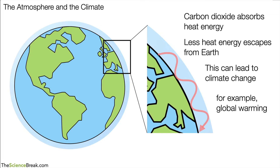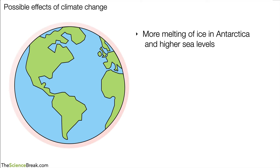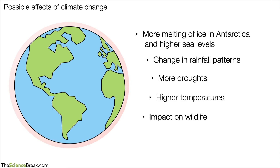One example of a change in the climate is global warming, when the average temperatures of the planet get higher. The possible effects include more melting of ice in the ice caps in Antarctica, leading to higher sea levels, and changes in rainfall patterns — sometimes more rain than expected, sometimes less. If there is less rain we can get droughts, which often affects farming. Temperatures are getting higher and records are being broken. There can also be impact on wildlife — a famous example is polar bears losing their habitat because of melting ice.